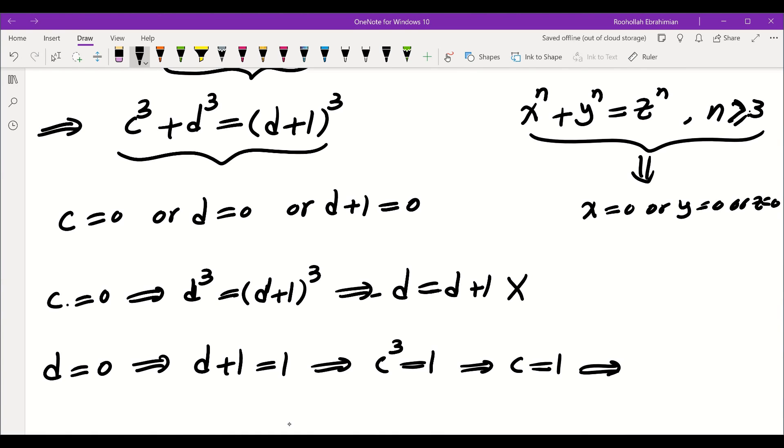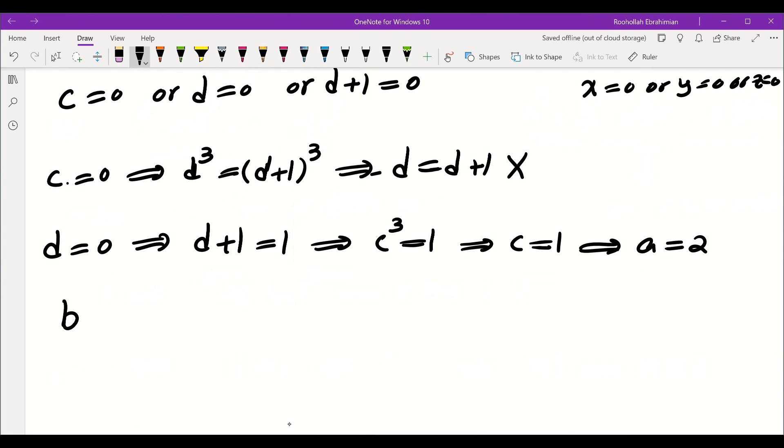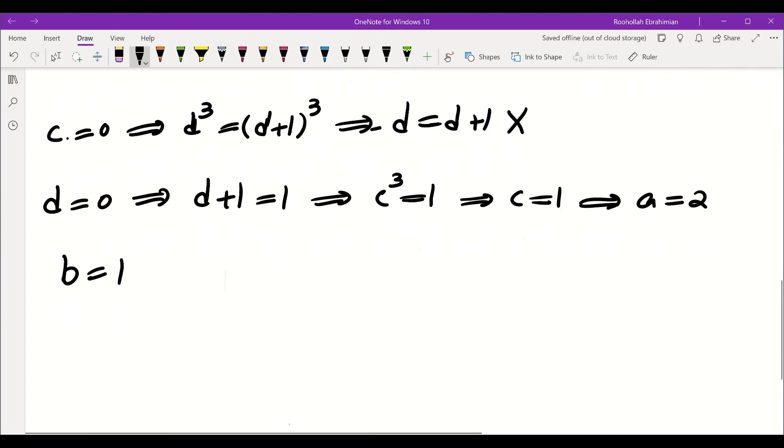Now, c is 1. a was 2c, so a becomes 2. And b was 2d plus 1, so b is 1. So that's one solution to the original equation.